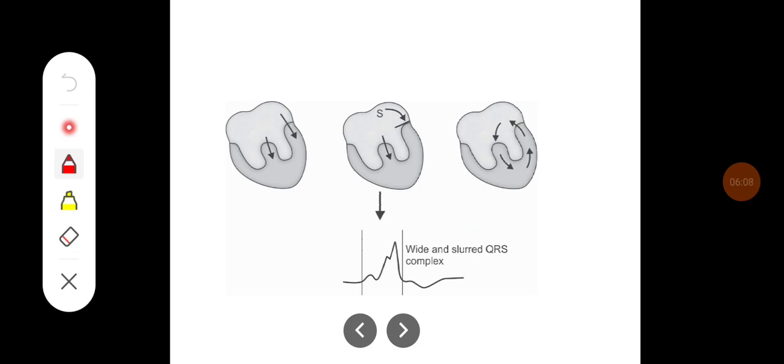So here you can see because of the bundle of Kent, the circus movement is established in WPW syndrome where it is characterized by wide and slurred QRS complex.